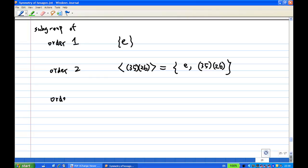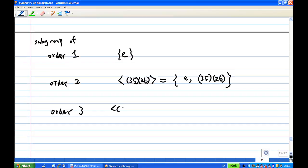Then, subgroup of order 3, subgroup generated by (1,3,5)(2,4,6). It consists of (1,3,5)(2,4,6), then the square of (1,3,5)(2,4,6), which is (1,5,3)(2,6,4), and then finally the identity.